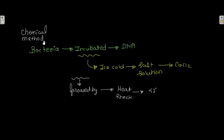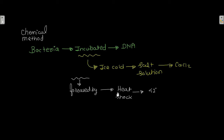In the chemical method, the bacteria is incubated with DNA in an ice cold salt solution which contains CaCl2, and this is followed by heat shock at 42 degrees Celsius. After the heat shock, the DNA enters the bacteria.